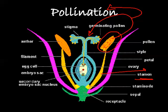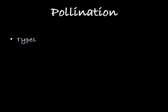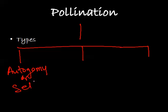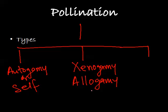Now we will see different types of pollination. We can divide pollination into three types. First is autogamy, which is also called self-pollination. The second one is xenogamy, also called allogamy or cross-pollination. The third one is geitonogamy.